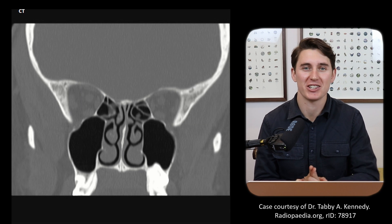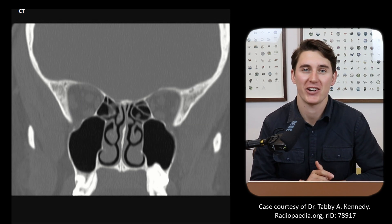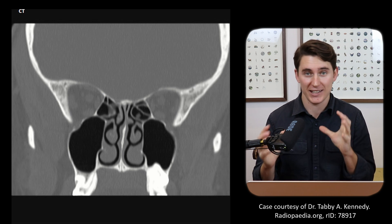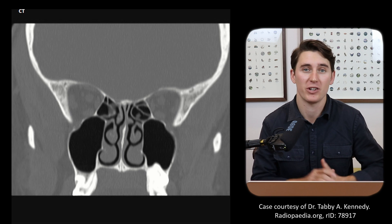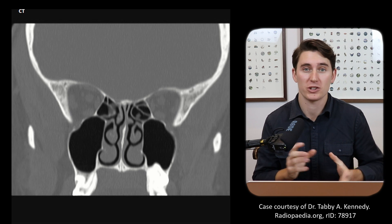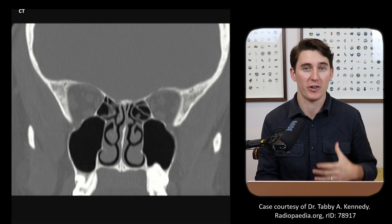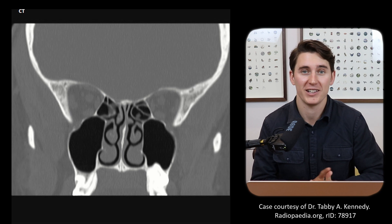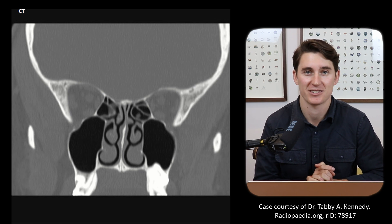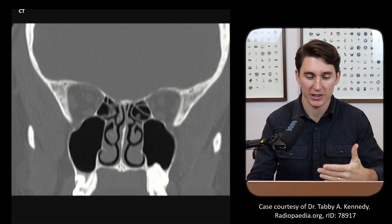Hello everybody and welcome back to another radiology tutorial. Today we're going to be discussing the anatomy of the paranasal sinuses. We're going to look at how they relate to the nasal cavity in space, how they communicate with the nasal cavity itself, and also look at a couple of important surrounding structures that we may need to warn surgeons about before they go operating within these paranasal sinuses. So let's start by identifying and naming them on a scan.